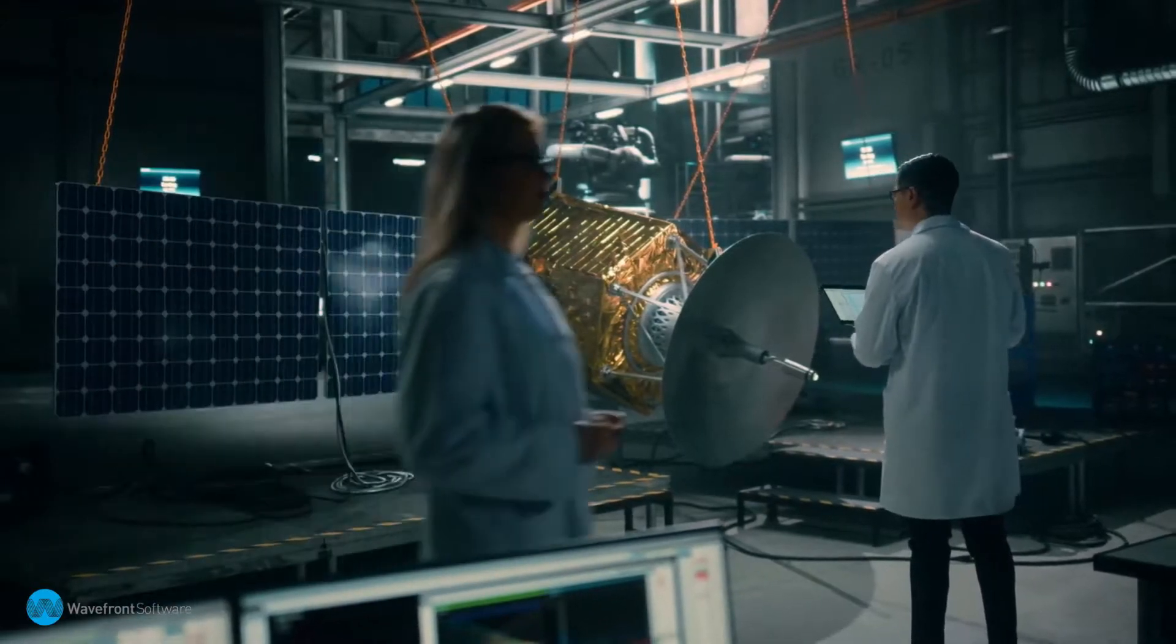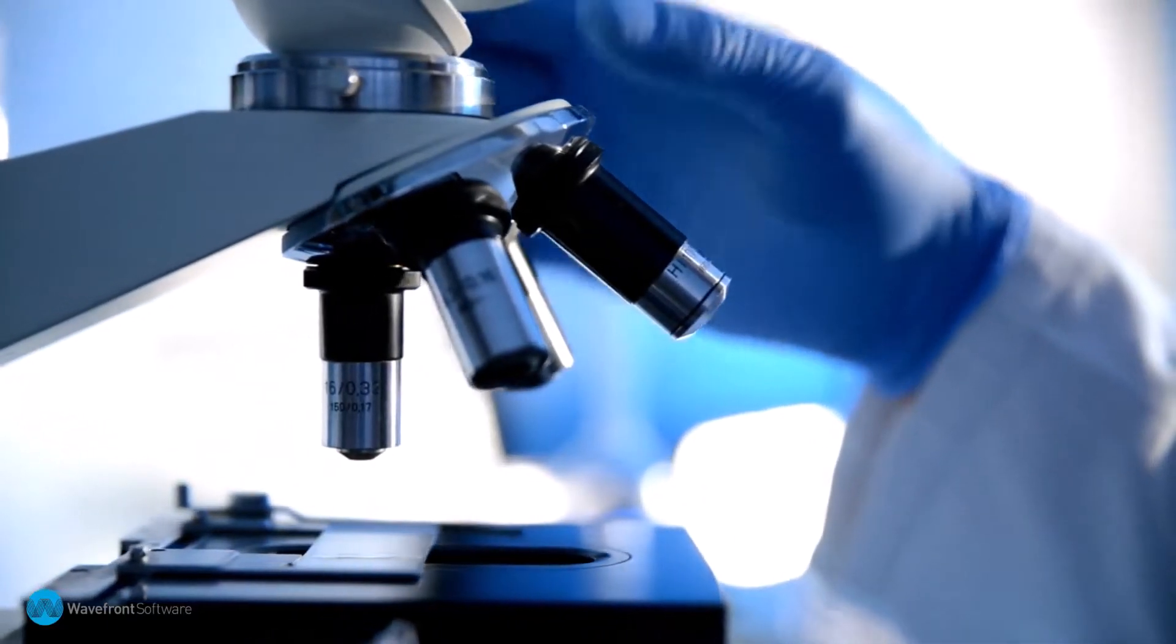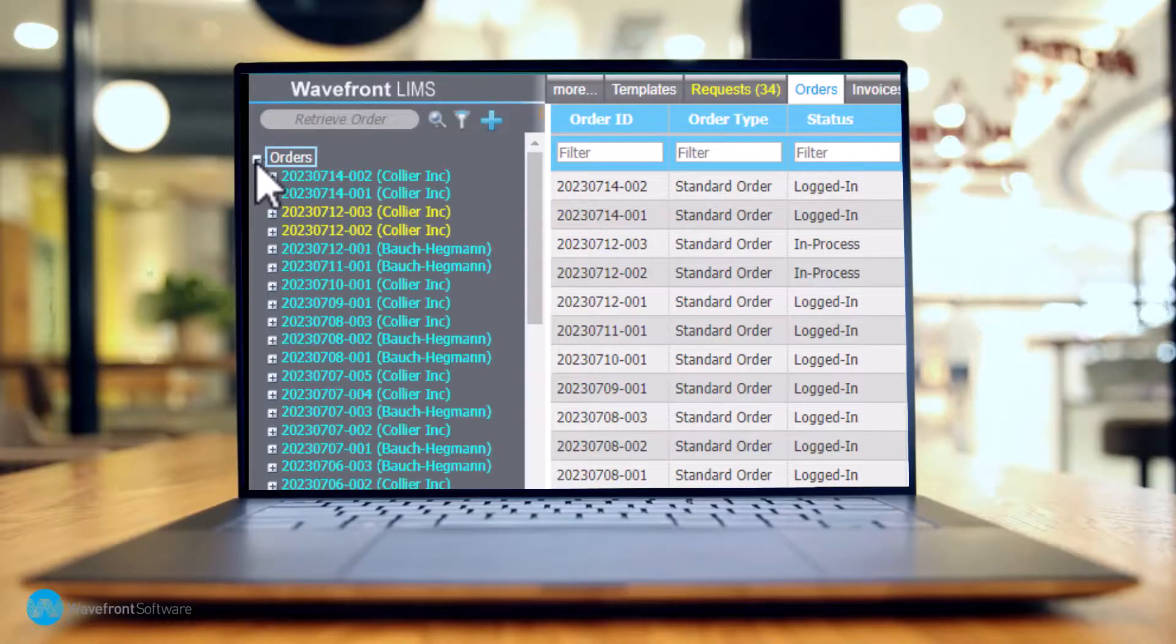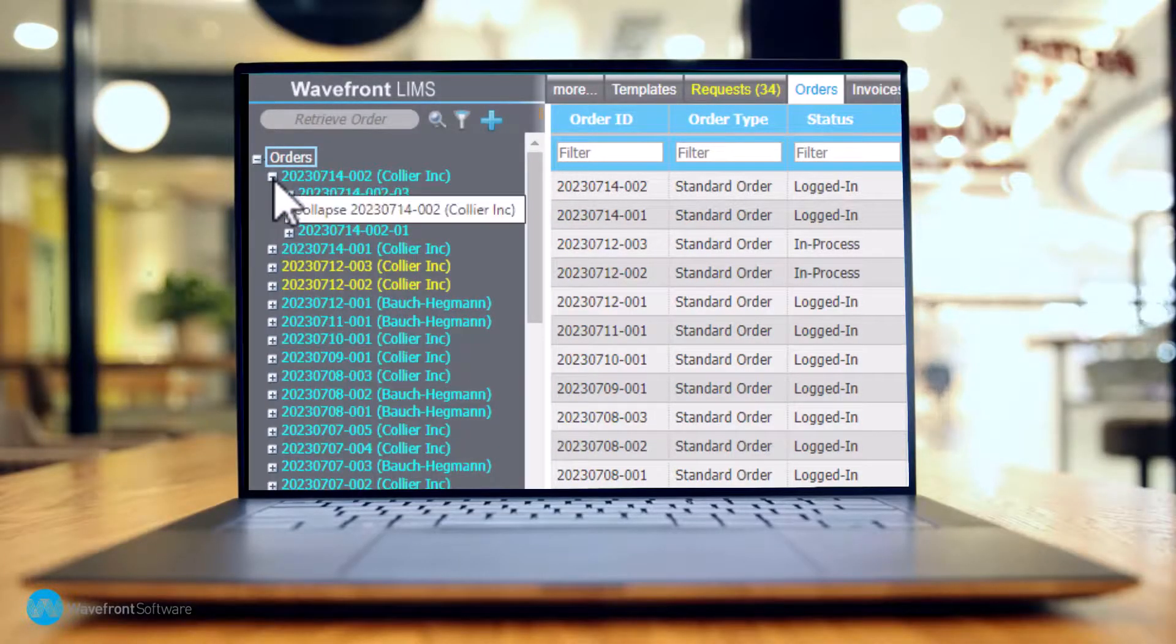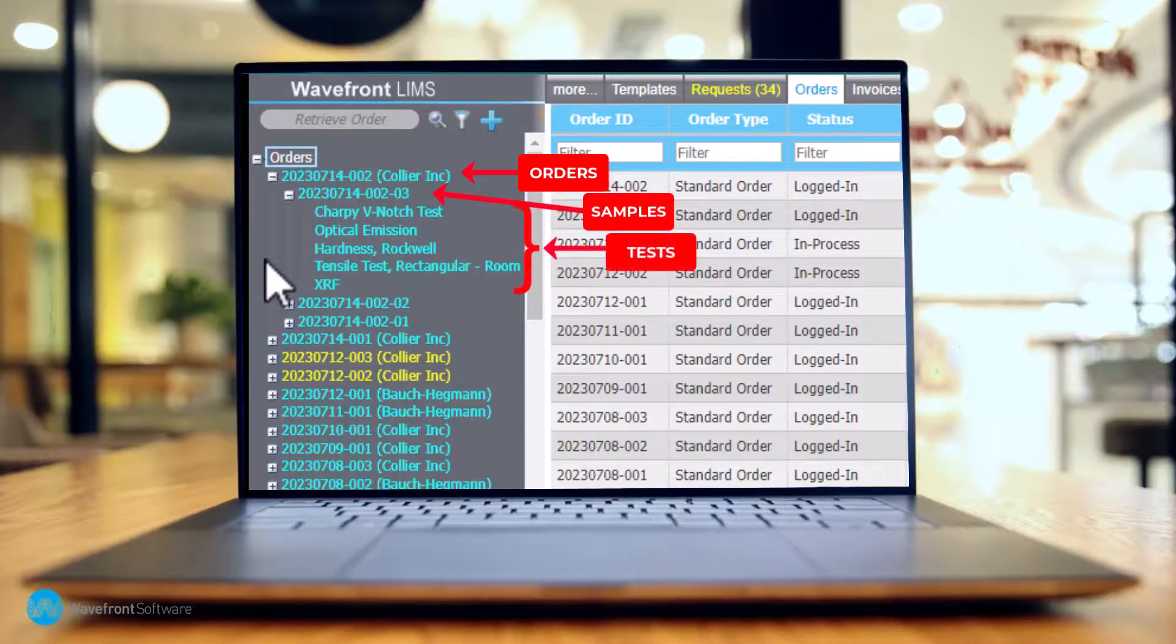One essential feature of a LIMS is the ability to track work in the laboratory and maintain traceability. This is typically done through a hierarchical structure that includes orders, samples, and assigned tests.